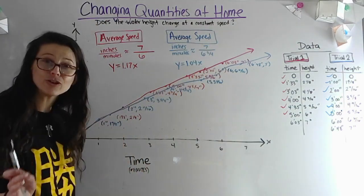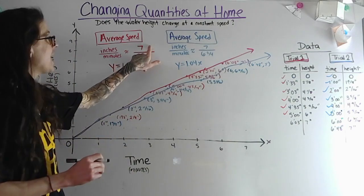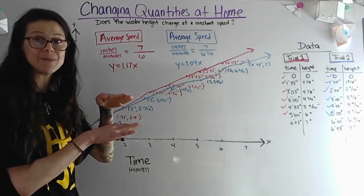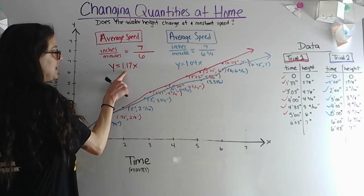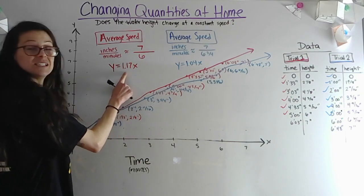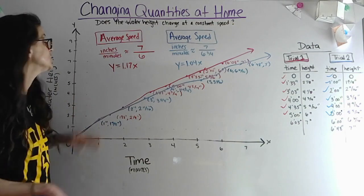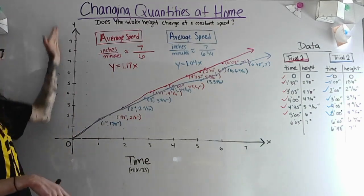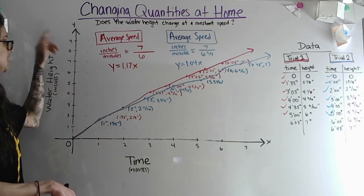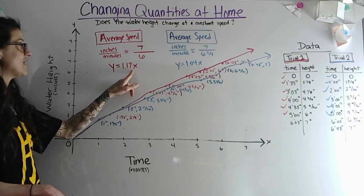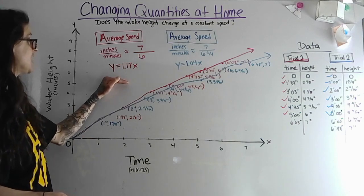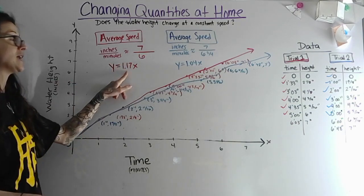To determine the approximate slope of this line, I can say that the average speed is just dividing that maximum height by the time it took to reach it. So for when I had dishes in my sink, it looks like 7/6 as a decimal is 1.17. This is telling me that the height of the water in my kitchen sink, y equals about 1.17 times the number of minutes.